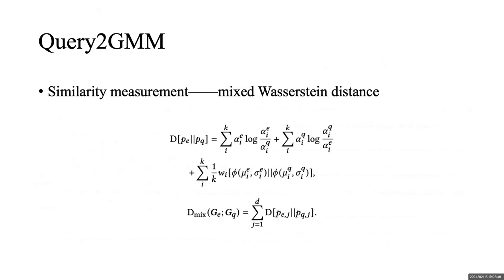Besides, we design a new similarity measure called mixed Wasserstein distance, allowing for computing relationships between entities and multiple answer subsets, which forms the foundation of the multimodal distribution modeling of query to GMM.